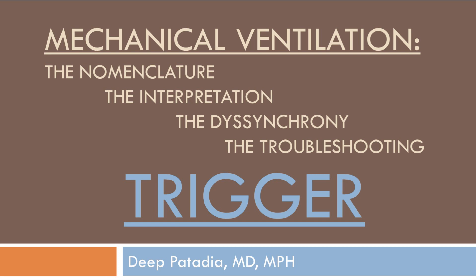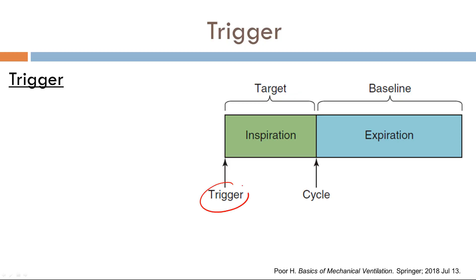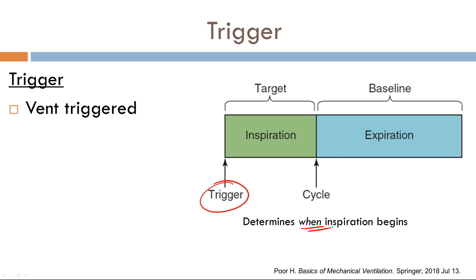Hi everyone, my name is Deep Patadia. In today's mechanical ventilation talk, I'm going to be talking about the trigger variable. The trigger is the first stage of a mechanical breath — it determines when inspiration begins. A breath can be triggered one of two ways: either the ventilator can trigger a breath, known as a ventilator-triggered breath, or the patient themselves can trigger a breath, known as a patient-triggered breath.